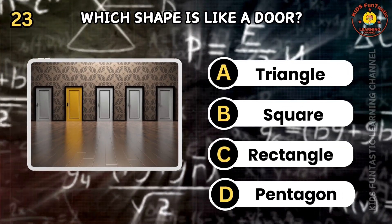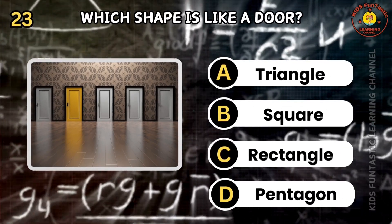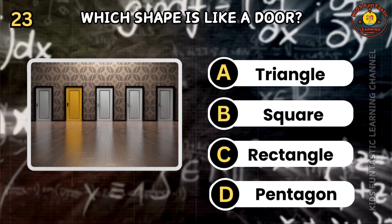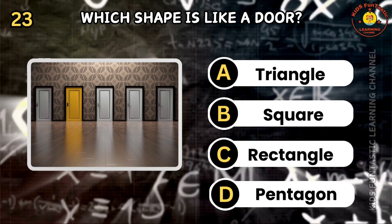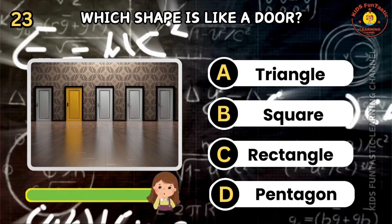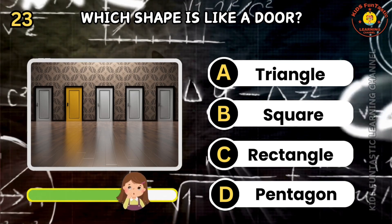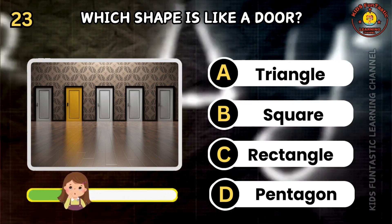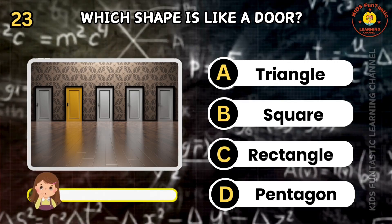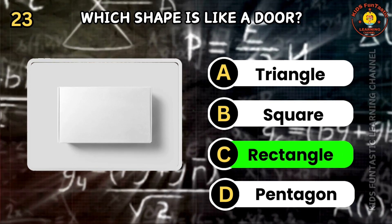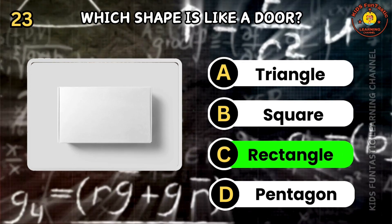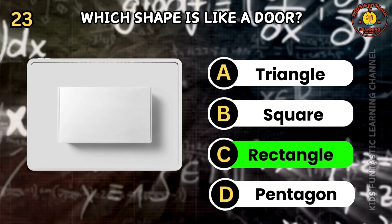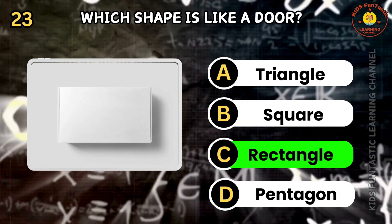Question 23. Which shape is like a door? A: triangle, B: square, C: rectangle, D: pentagon. Awesome job! The correct answer is C. A door is usually in the shape of a rectangle.